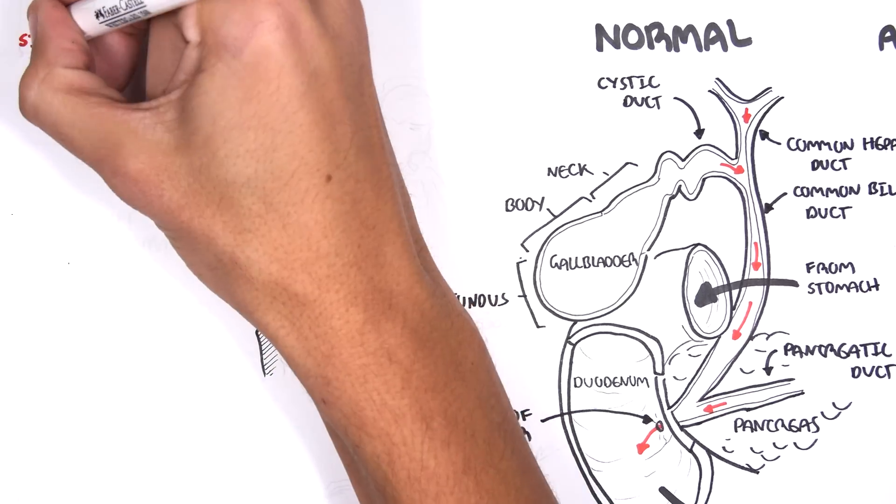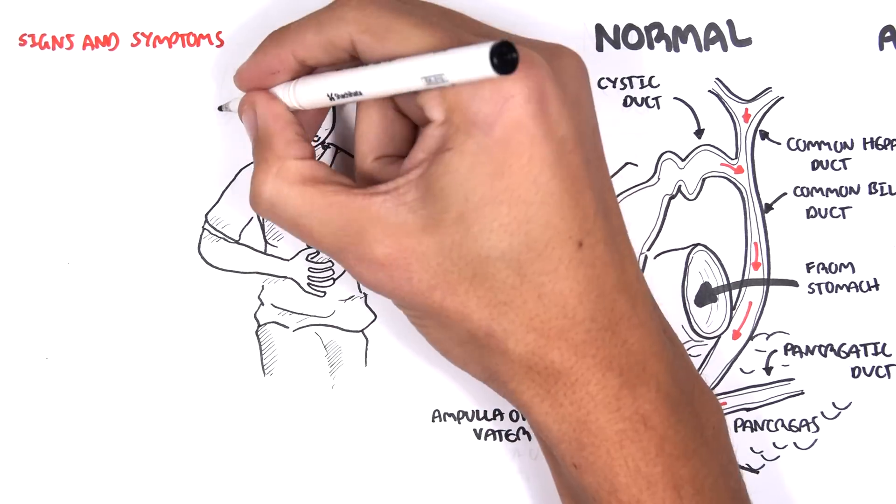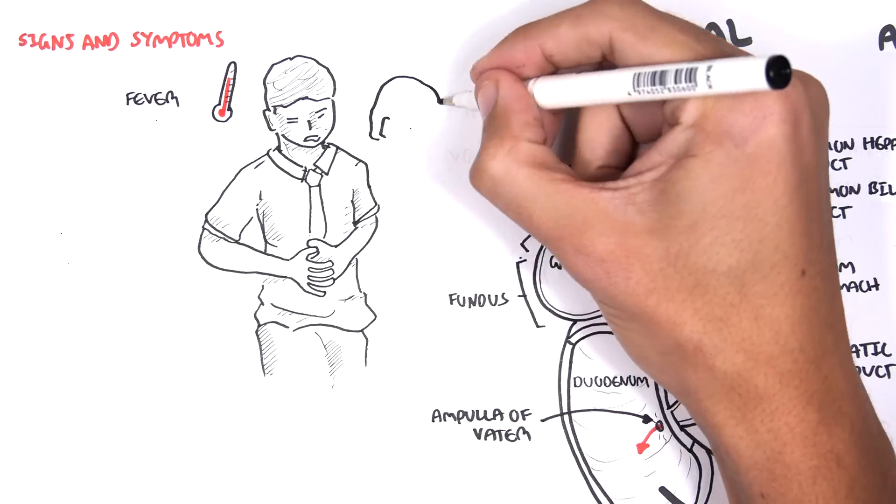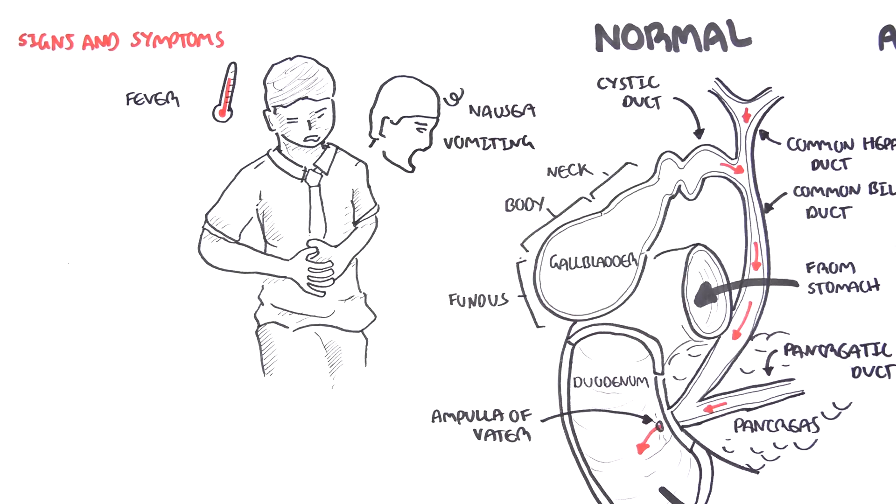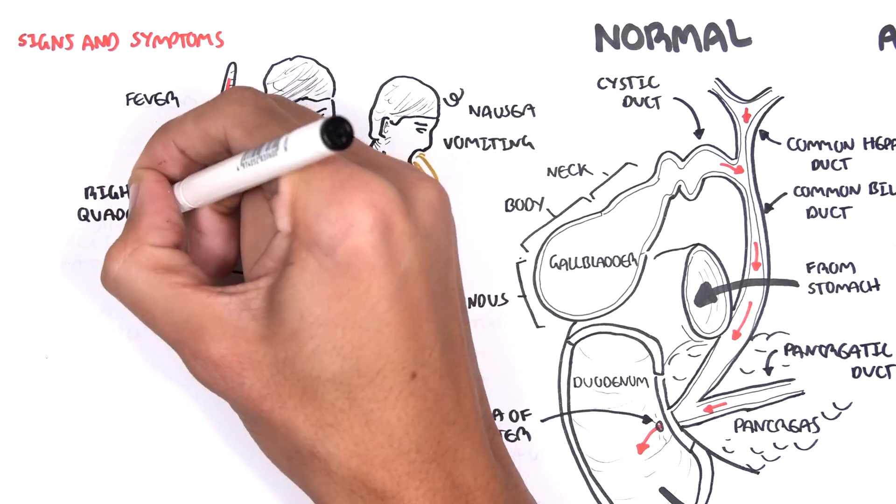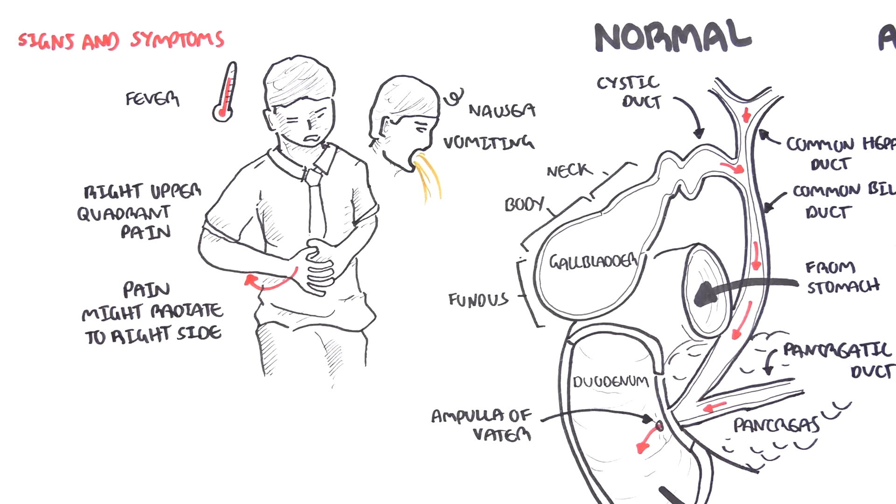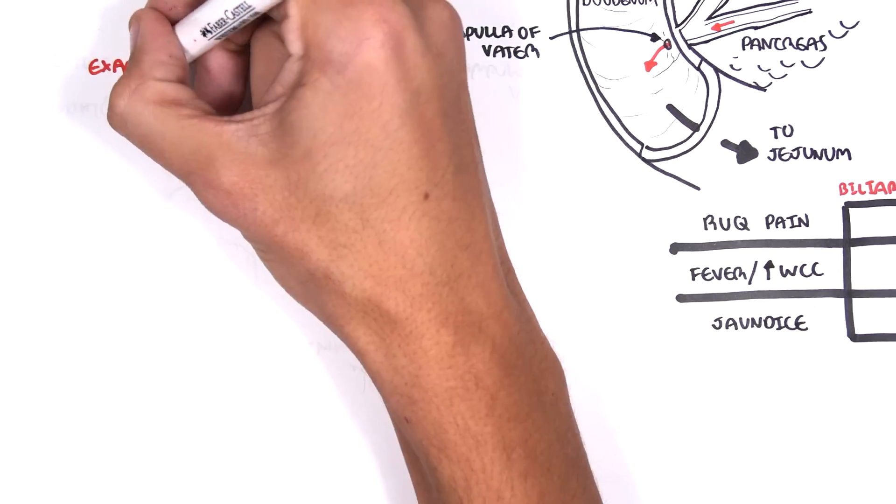The signs and symptoms of acute cholecystitis specifically are fever, nausea, vomiting, right upper quadrant pain, pain which may radiate to the right side, the back. On examination, there is a positive Murphy sign.